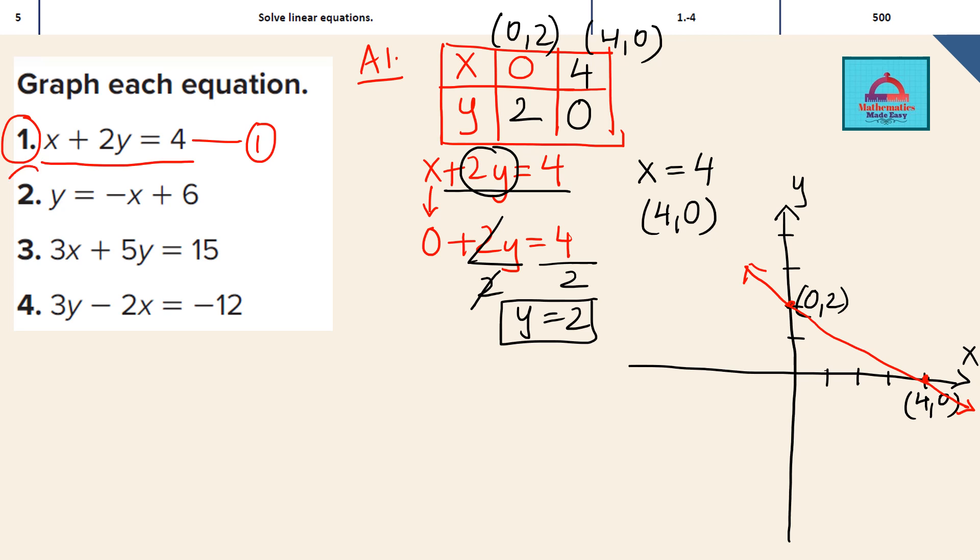Similarly, we can do the table of values for question 2. So I will make the same table, x and y. First we take x 0, then we take y 0. So let's calculate the intercepts. So when x is 0, this minus x is 0, y is 6. That means the point is 0, 6. When y is 0, this becomes 0. So x is going to be 6 again. So the two points are 0, 6 and 6, 0.